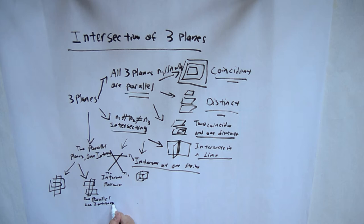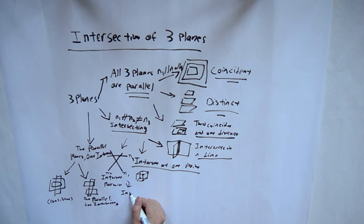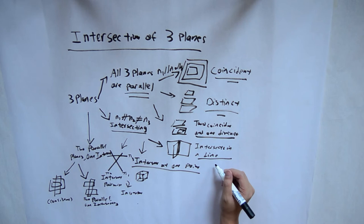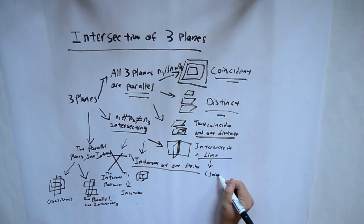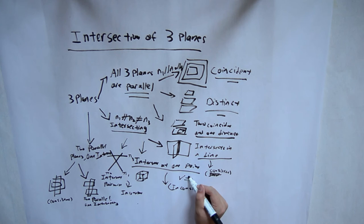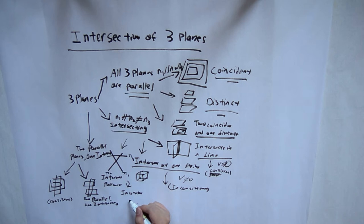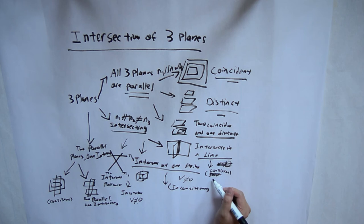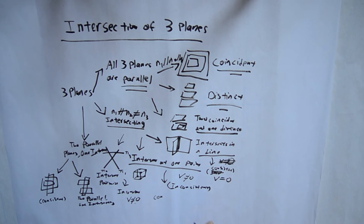Two coincident planes with one intersecting is consistent, meaning it has one or more solutions. Intersecting pairwise is inconsistent, meaning it has no solutions. Intersection at a line is consistent. Intersecting at one point is inconsistent. We can determine consistency using the volume formula: N1 dot product of (N2 cross product N3). If the volume equals zero, we solve the system to determine consistency. If the volume is not zero, the vectors are non-coplanar.